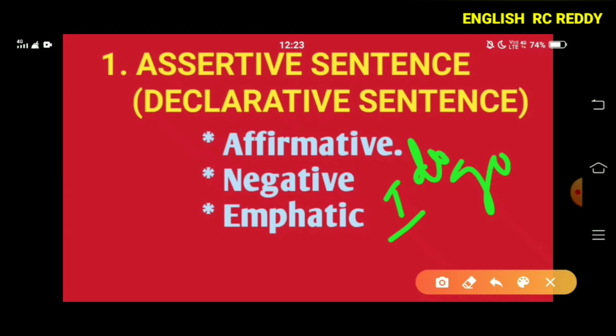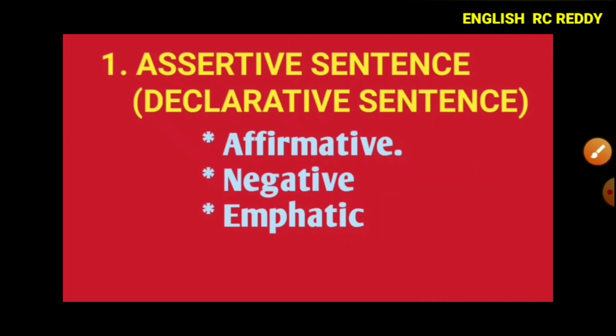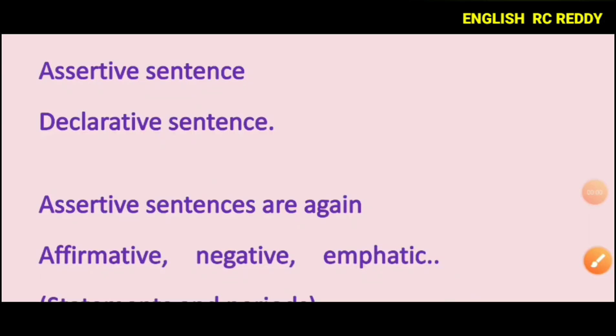Let's go through the third sentence type. Assertive sentence is also called declarative sentence. The three subtypes are affirmative, negative, and emphatic. Let's go into detail.